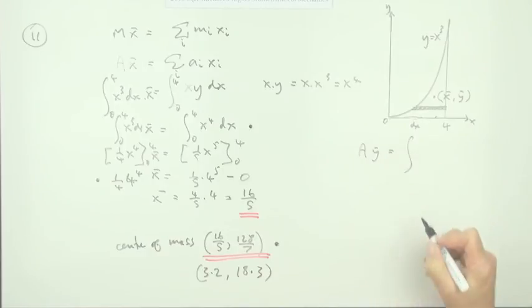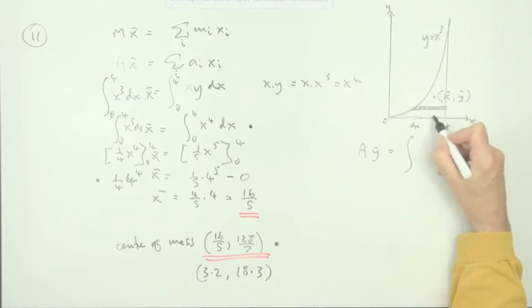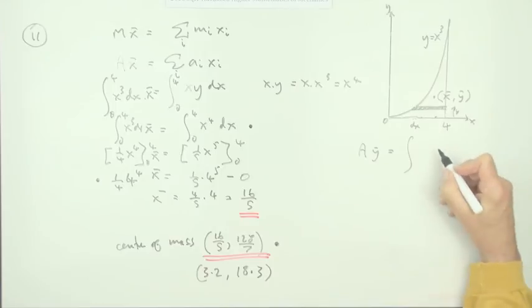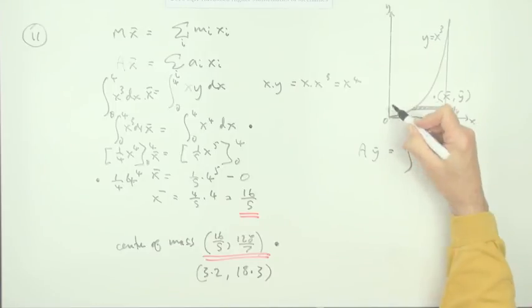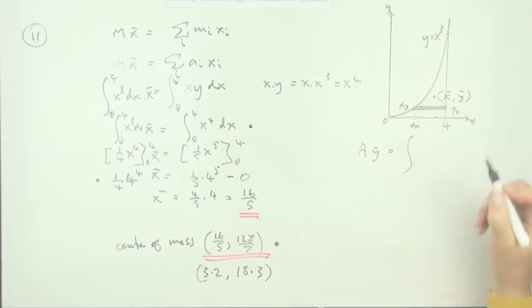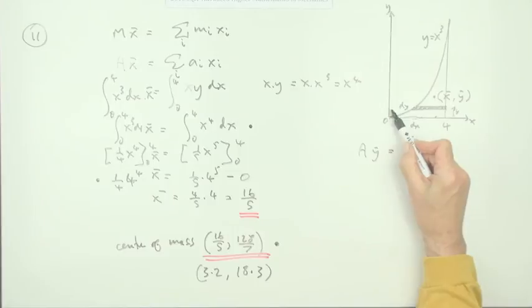would be the sum of the area of that times the distance of its center from the axis, which in this case is just y. The width of that, since it's in this direction, is dy. And the width, the length of that would be, now it's not x,